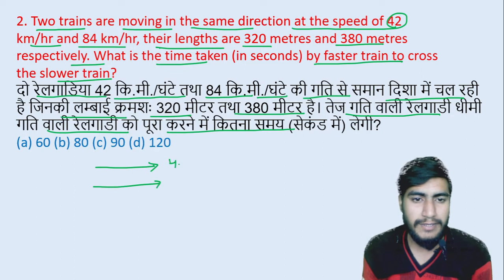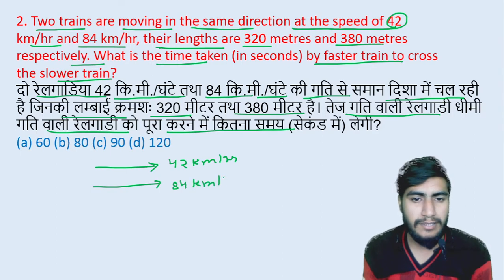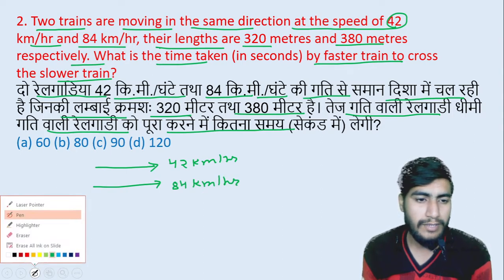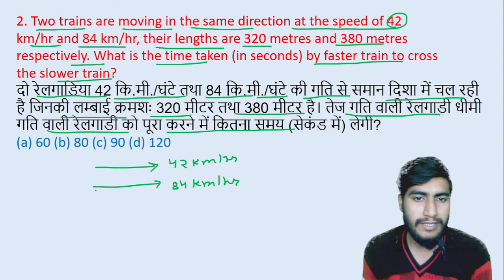One train is at 42 km per hour and another is at 84 km per hour. There is no distance between the two trains.